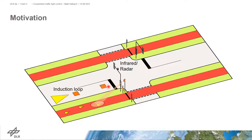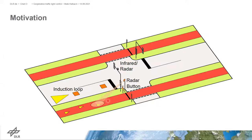If cyclists are considered in the control loop, detection is often established with a request button next to the stop line, so the cyclist can request their desired phase to pass the intersection, but they have to stop for that. Also rarely used are infrared or radar detection for bicycle consideration. However, all three alternatives — infrared, radar, and the request button — share the same disadvantage: it is only possible to detect a cyclist at a specific position without additional information. Since cyclist behavior is heavily dependent on the individual constitution of every cyclist, we decided to use V2I technology to detect cyclists at the intersection.